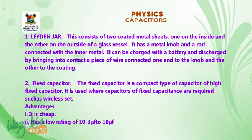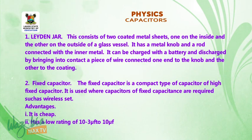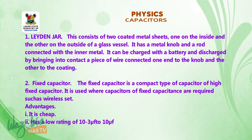2. Fixed capacitor. The fixed capacitor is a compact type of capacitor of high fixed value. It is used where a capacitor of high fixed capacitance is required, such as in a wireless set. Advantage: it is cheap. Its rating is from 10 raised to negative 3 microfarad to 10 raised to 10 microfarad.